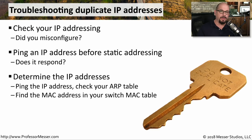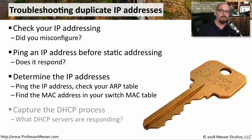If you are manually configuring the IP address and you know it's the right address, but some other device is already using it, you can use a third-party device to ping that IP address, find the MAC address of that device, and then locate that MAC address in your switch. That should tell you what interface that device is connected to. If you think you're getting this duplicate IP address from a DHCP server, capture the packets associated with the DHCP process, and you'll be able to tell exactly which DHCP server is providing you that duplicate IP address.